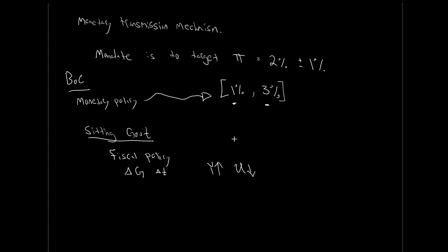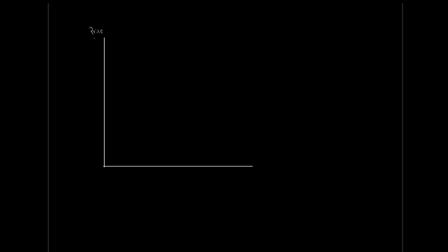Let's take a look at this scenario — maybe a political party had a goal to drop unemployment rates. How this government exercising that goal comes into conflict with the Bank of Canada's mandate, and why the Bank of Canada may need to use monetary policy in conflict with that fiscal policy, creating potential tension. To do so, let's go back to our aggregate demand and aggregate supply diagram. We have price level on our vertical axis and real GDP on our horizontal axis.